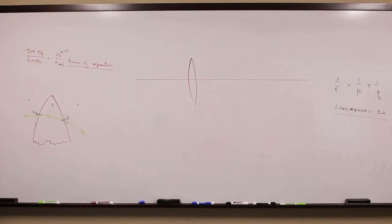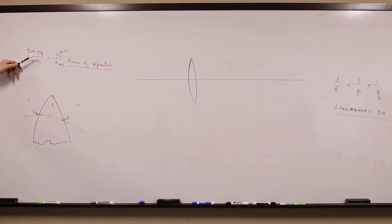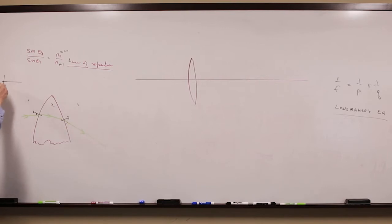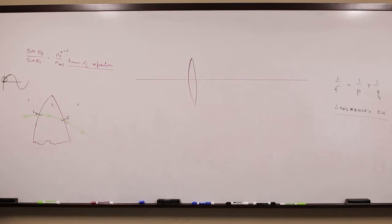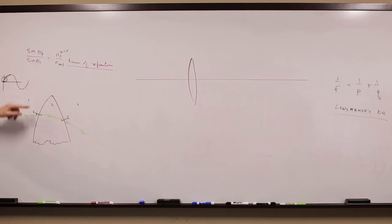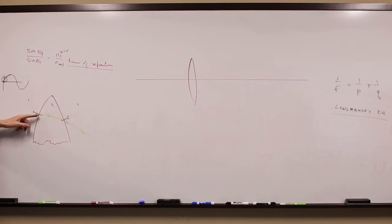Looking at this law of refraction equation, it says the ratio of these sines is the same as the ratio of these numbers. In other words, the sine of this angle is one and a half times bigger than the sine of that angle. The sine of a bigger angle is simply a bigger number. So this number is bigger than this number, which means this angle is bigger than this angle, which means when the light goes into the top of the convex lens, it comes out at a smaller angle than it went in at.